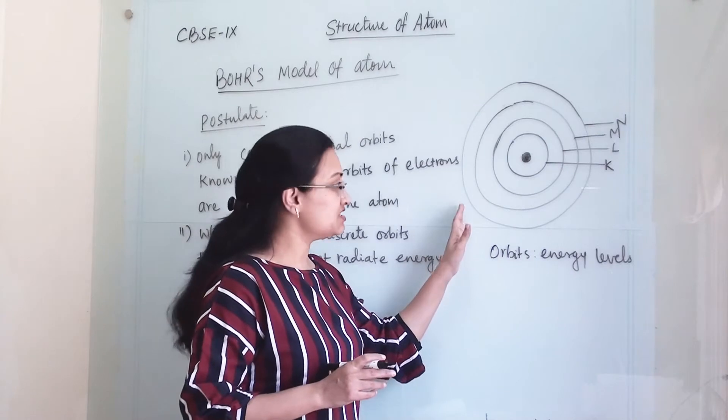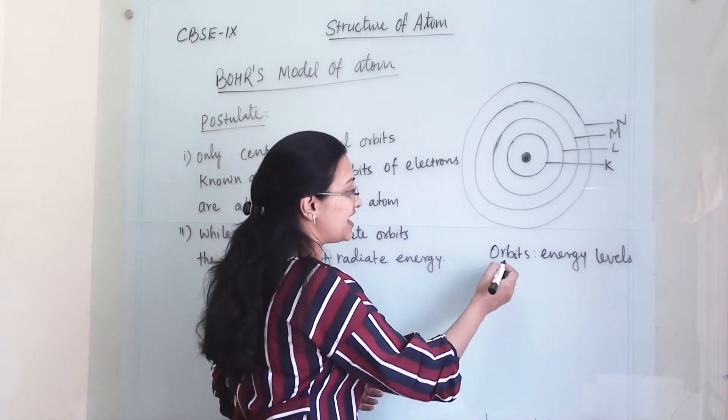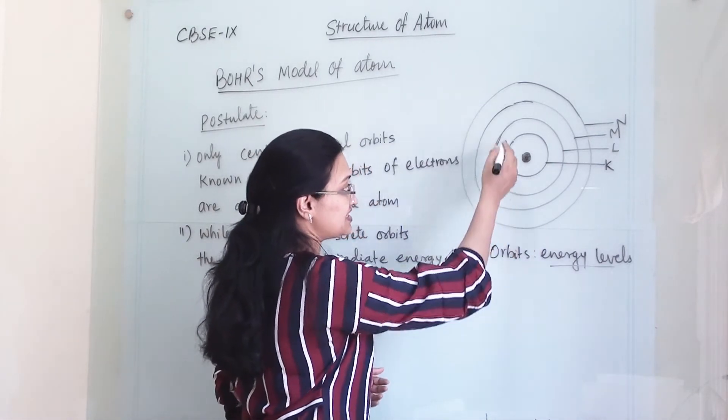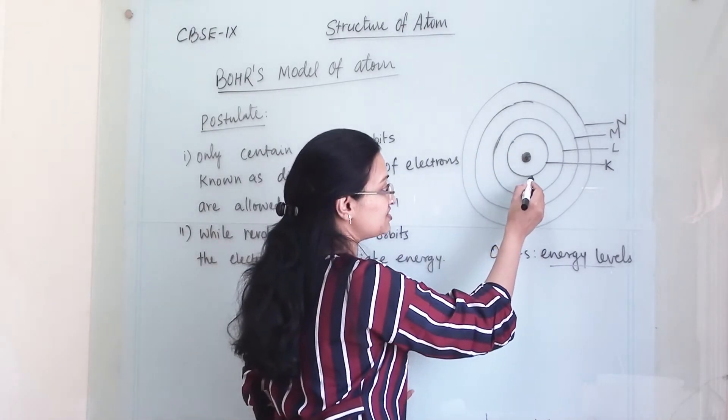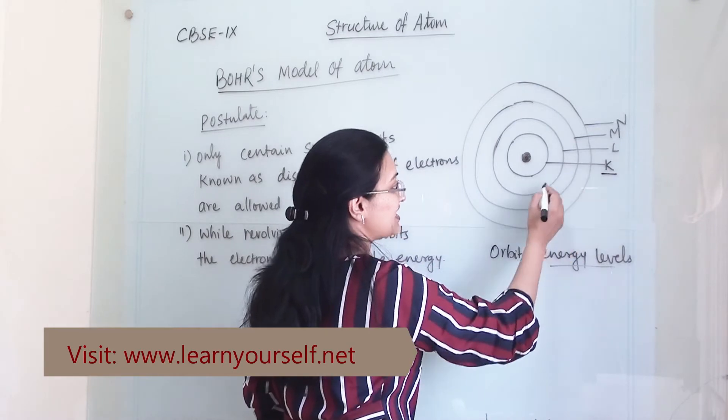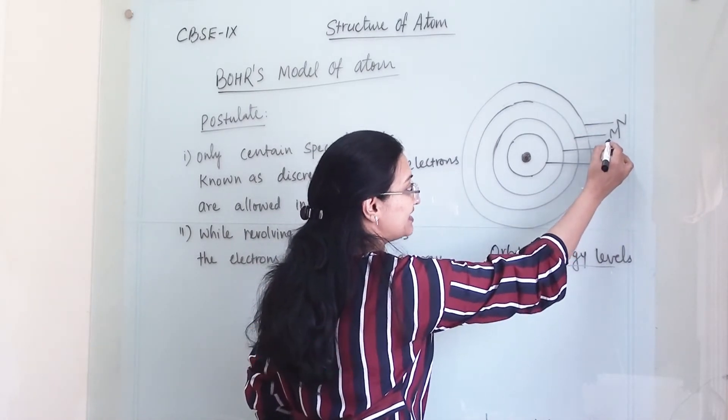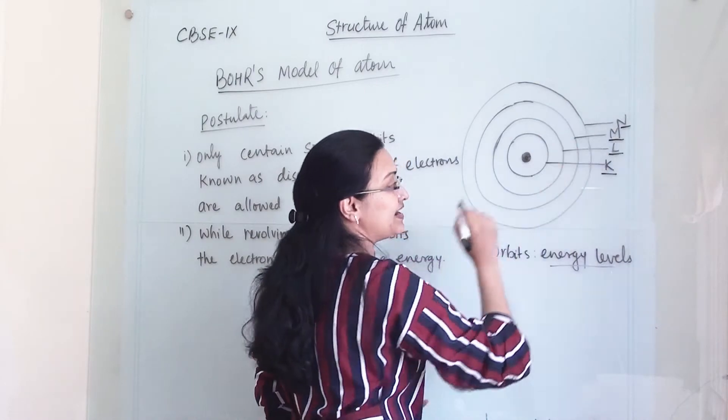He proposed this structure of atom in which he suggested that these are the energy levels which are around the nucleus. The first energy level he mentioned as K, second energy level he mentioned as L, and successively M and N.